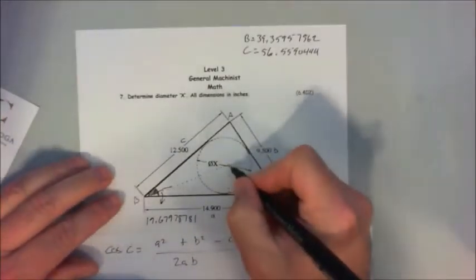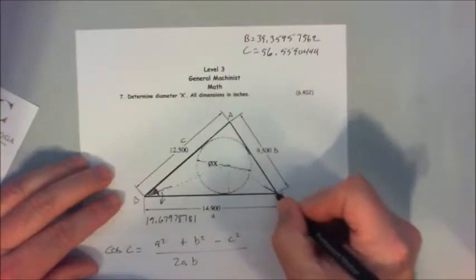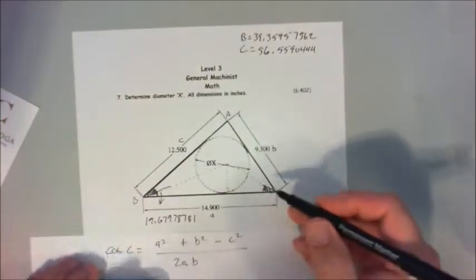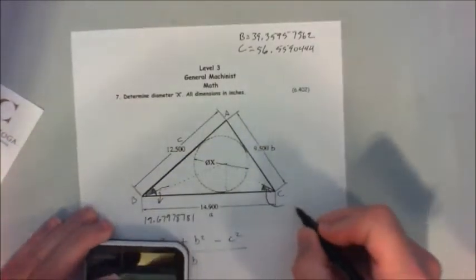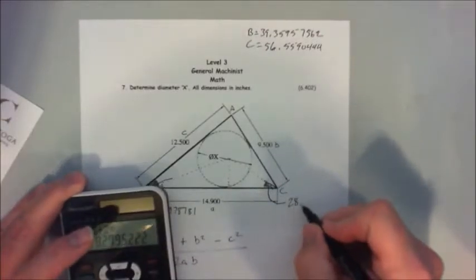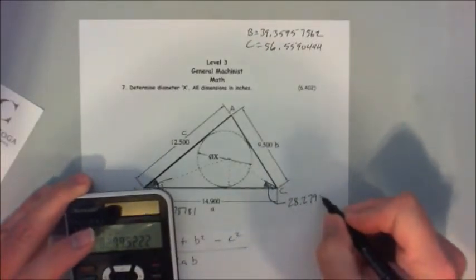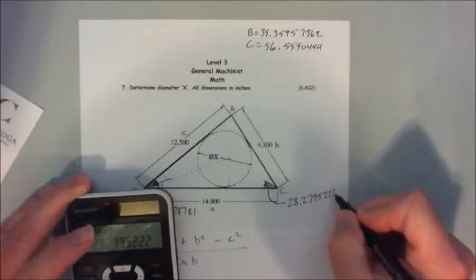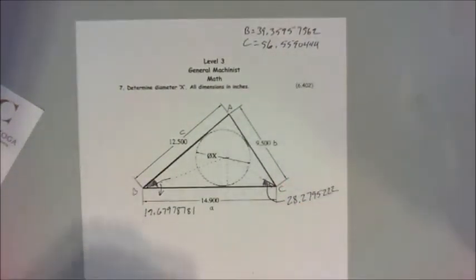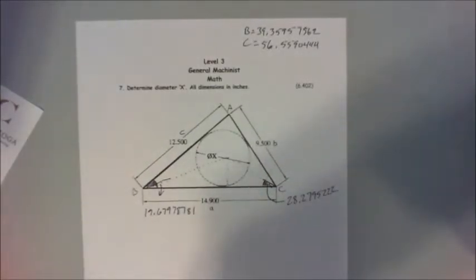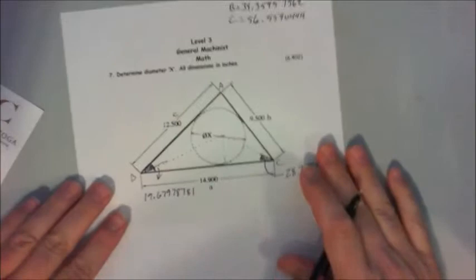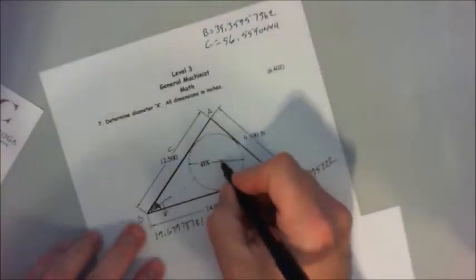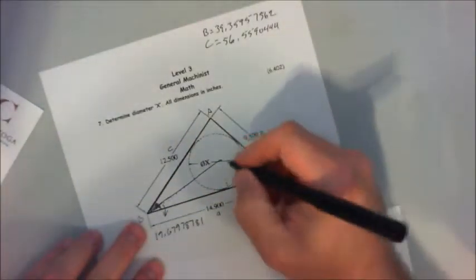So what we want to do here is we want only this half, so I'm going to divide that by two, and this guy here equals 28.2795222.